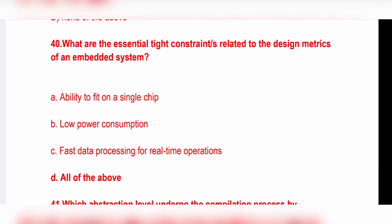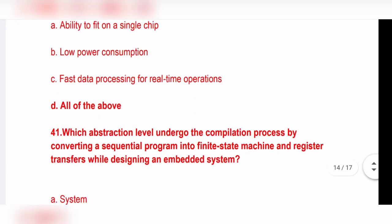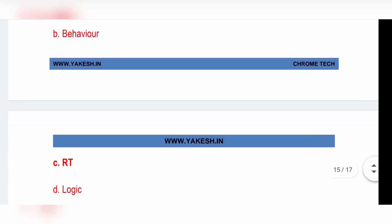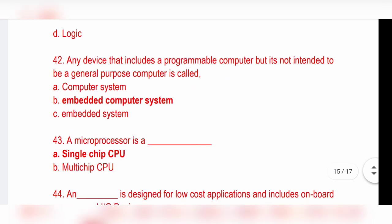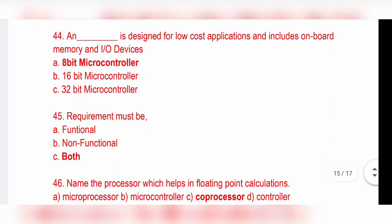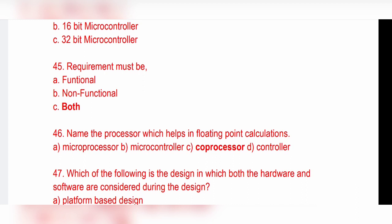Option B is the correct answer. While designing an embedded system, option C, RTL is the correct answer. Any device that includes a programmable computer but is not intended to be a general purpose computer is called embedded computer system. Option B, embedded computer system is the correct answer. A microprocessor is a single chip CPU, and an 8-bit microcontroller is designed for low-cost applications and includes on-board memory and I/O device. Requirements must be both functional and non-functional. Option A and B are right, so option C is the correct answer.